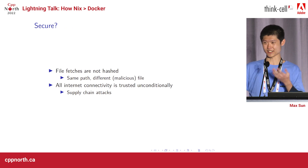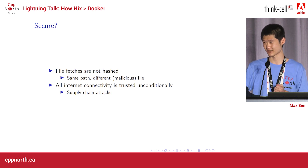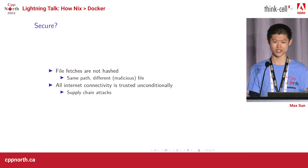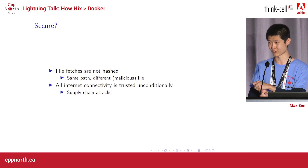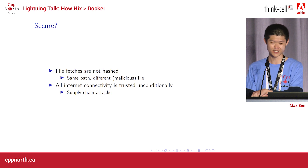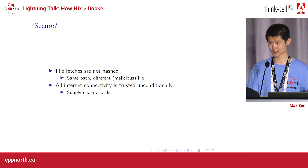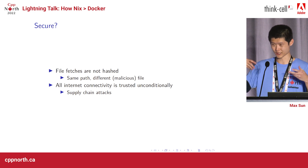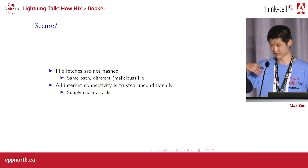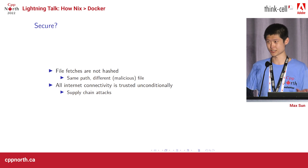Is Docker secure? Well, file fetches have no hash, so you can fetch from the same path from a website or your local file system and it could be a different file — maybe malicious. Internet connectivity is also usually trusted without verification, so you can open yourself up to supply chain attacks.